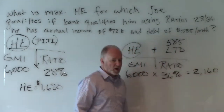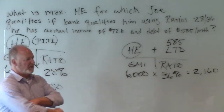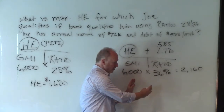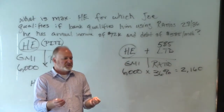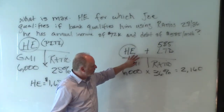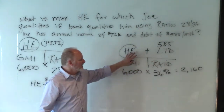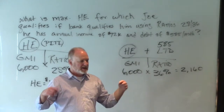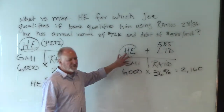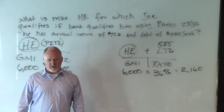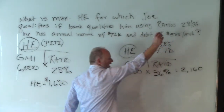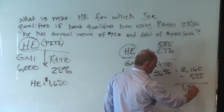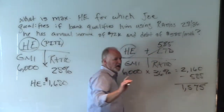I need to tell you the only complicated part of this problem. When I multiplied the bottom numbers down here and got $2,160 — what does $2,160 equal? It equals everything up top: housing expense and long-term debt. But I didn't ask what the housing expense and long-term debt is — I asked what the housing expense was. So I need to isolate housing expense. I need to make that $585 disappear. How do you make something disappear? You subtract it. And if you subtract it there, you subtract it here. That number becomes $1,575.